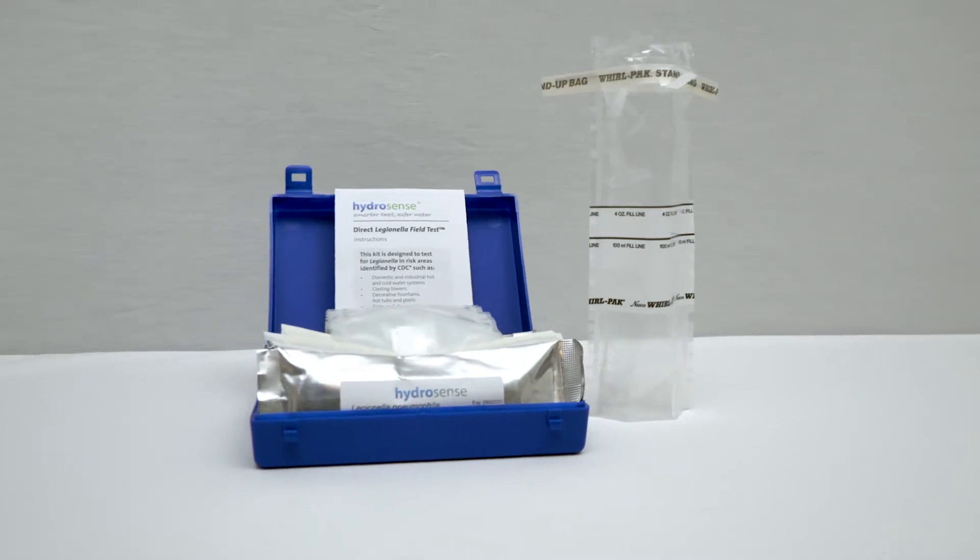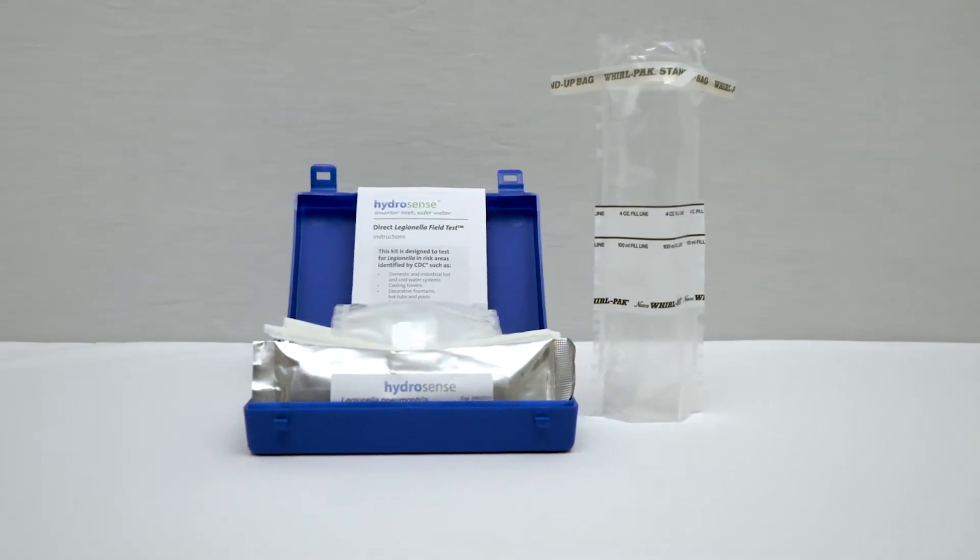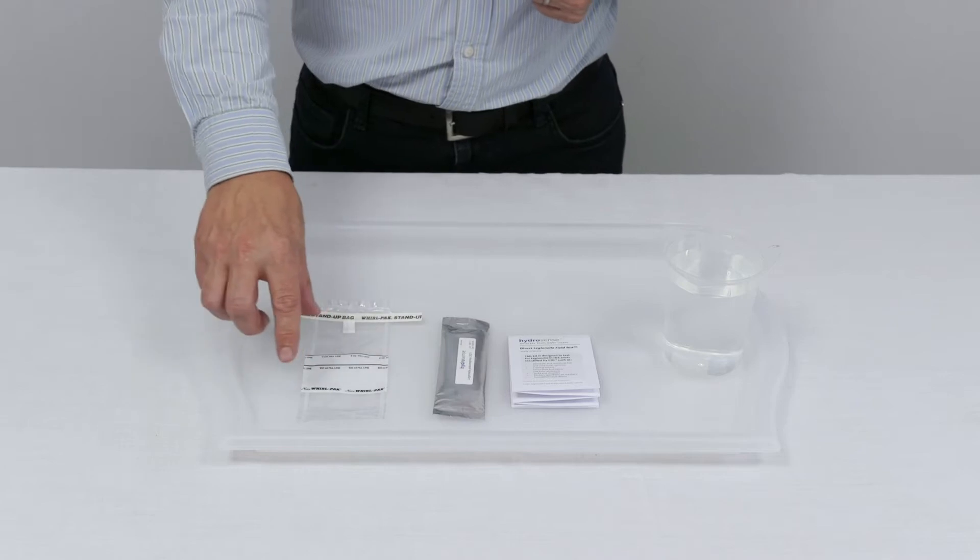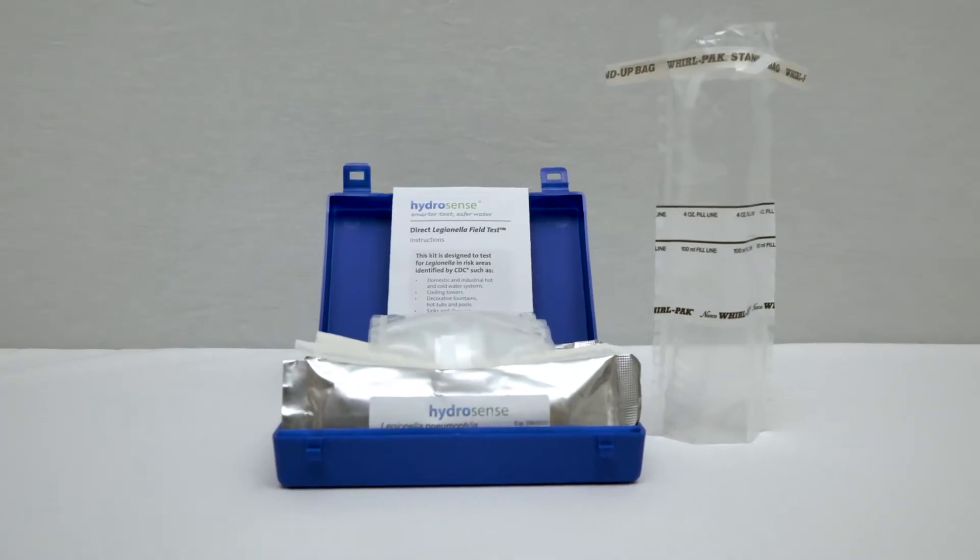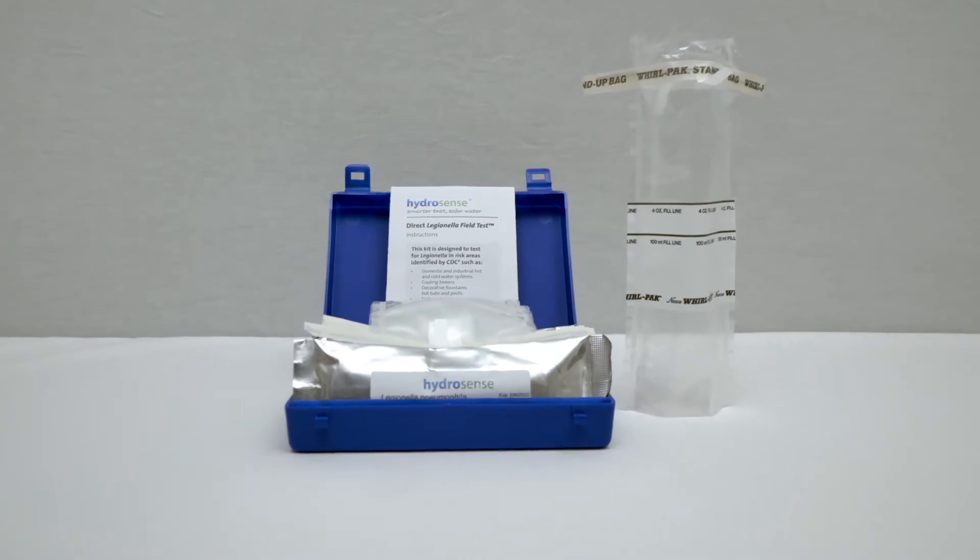The Direct Legionella Field Test comes in a 10 test kit format that contains 10 test strips and 10 stand-up bags. It has a sensitivity of 100,000 CFU per liter and is therefore recommended for frequent use in low-risk industries.